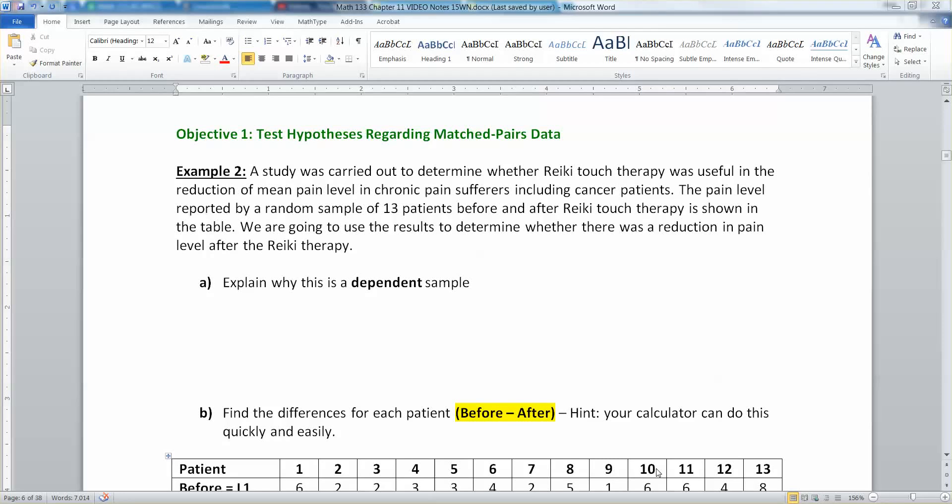Now that we've reminded ourselves of the differences between dependent and independent samples, we're going to start running hypothesis tests and confidence intervals for that matter, on those dependent and independent samples. So we're starting off in section 11-2, which is we're going to be looking at matched pairs data, in particular the mean for matched pairs data.